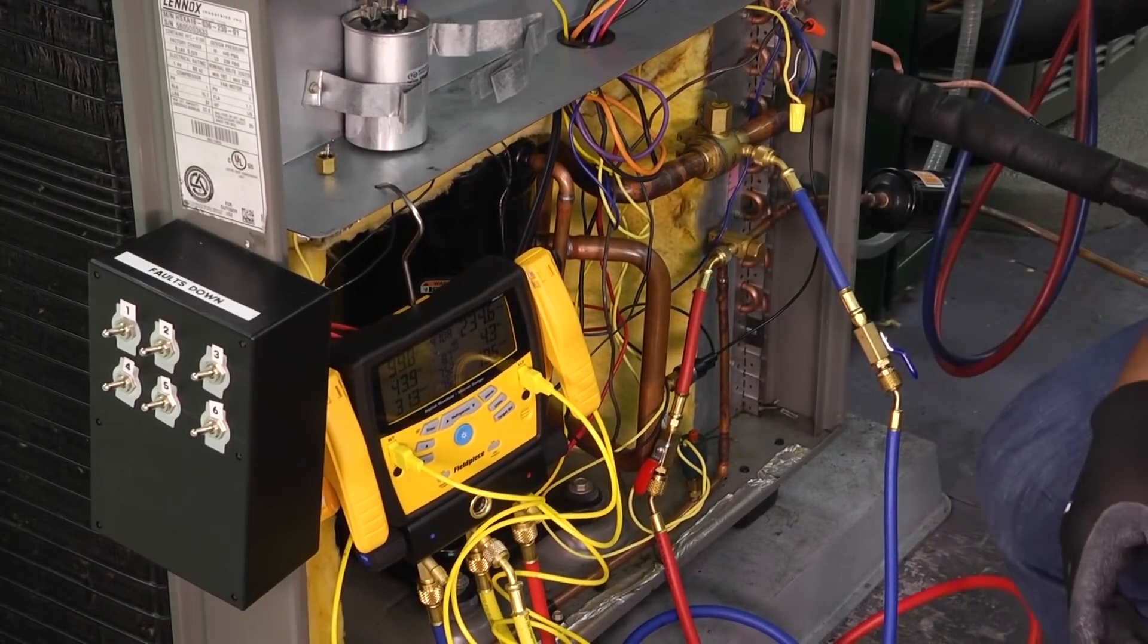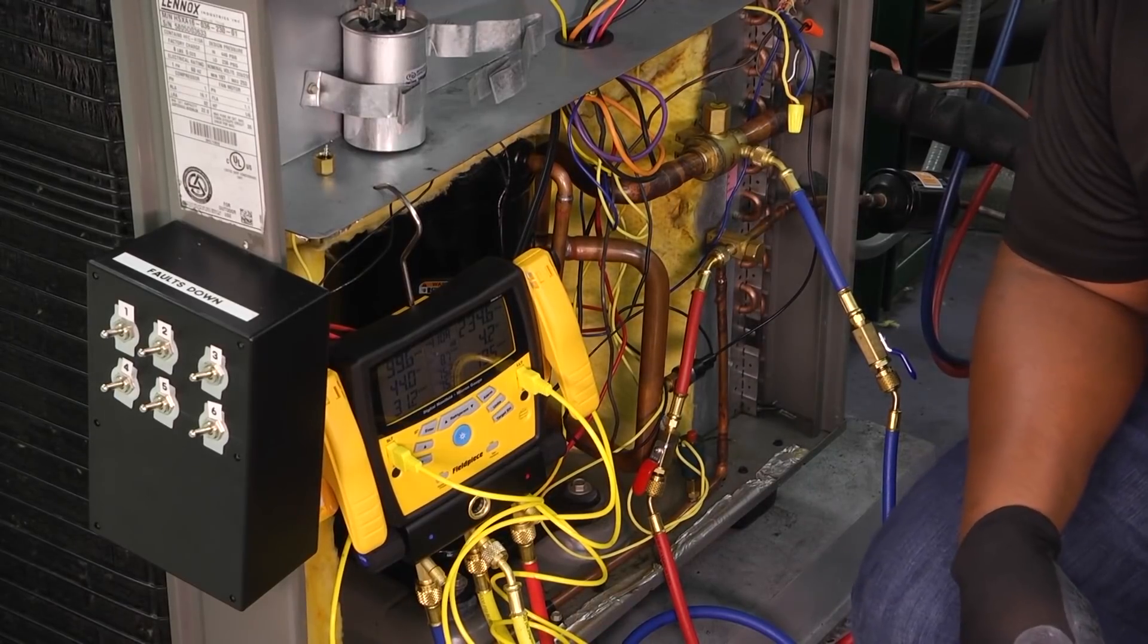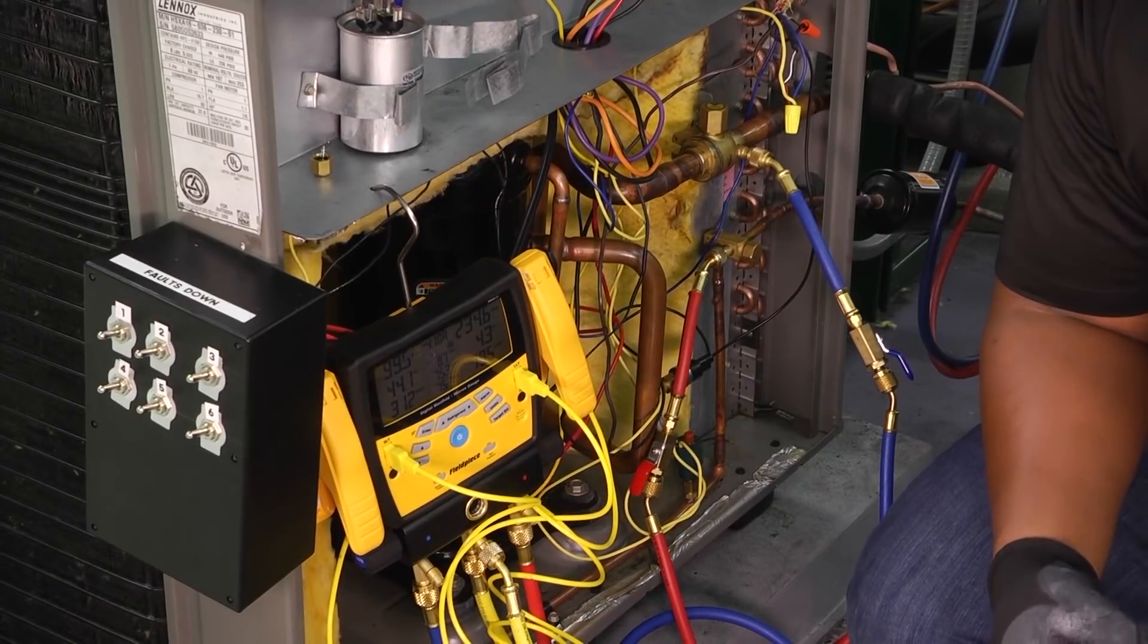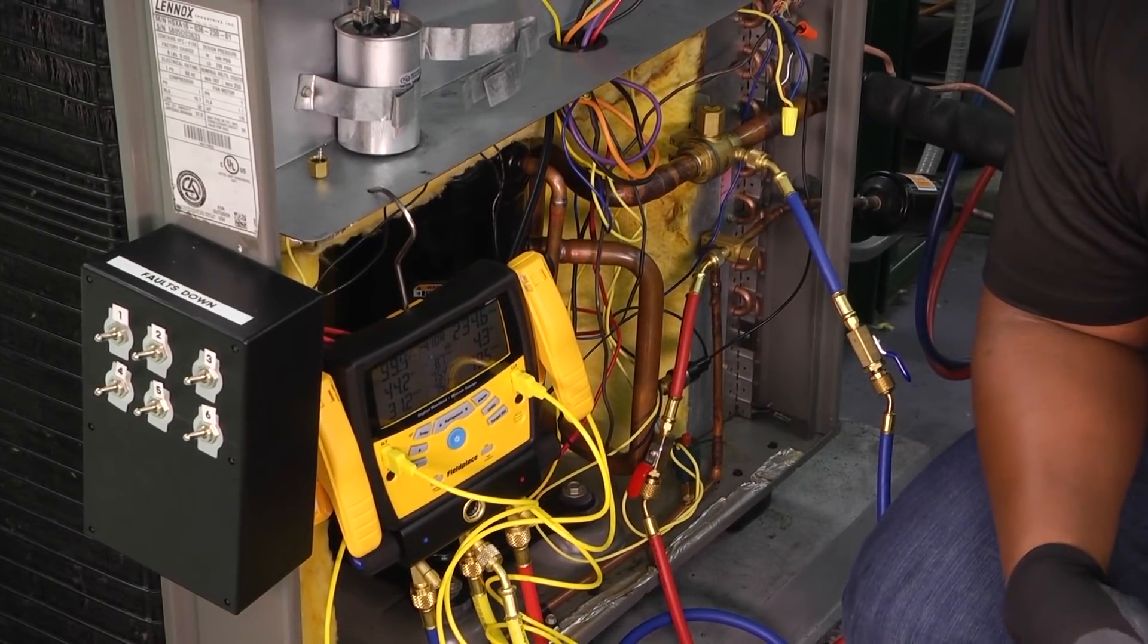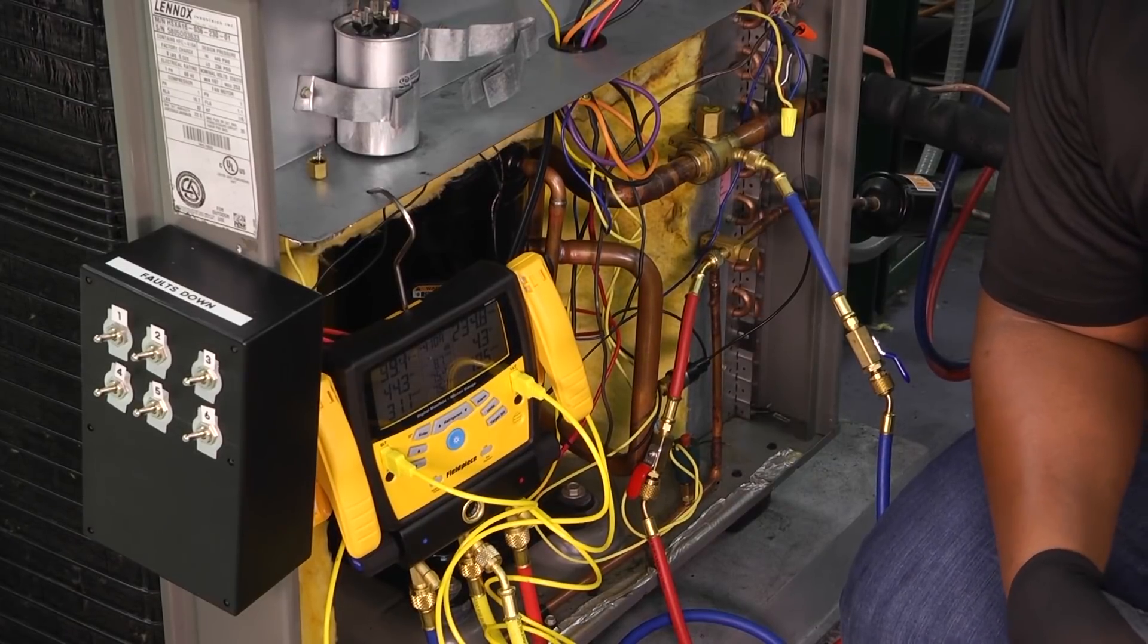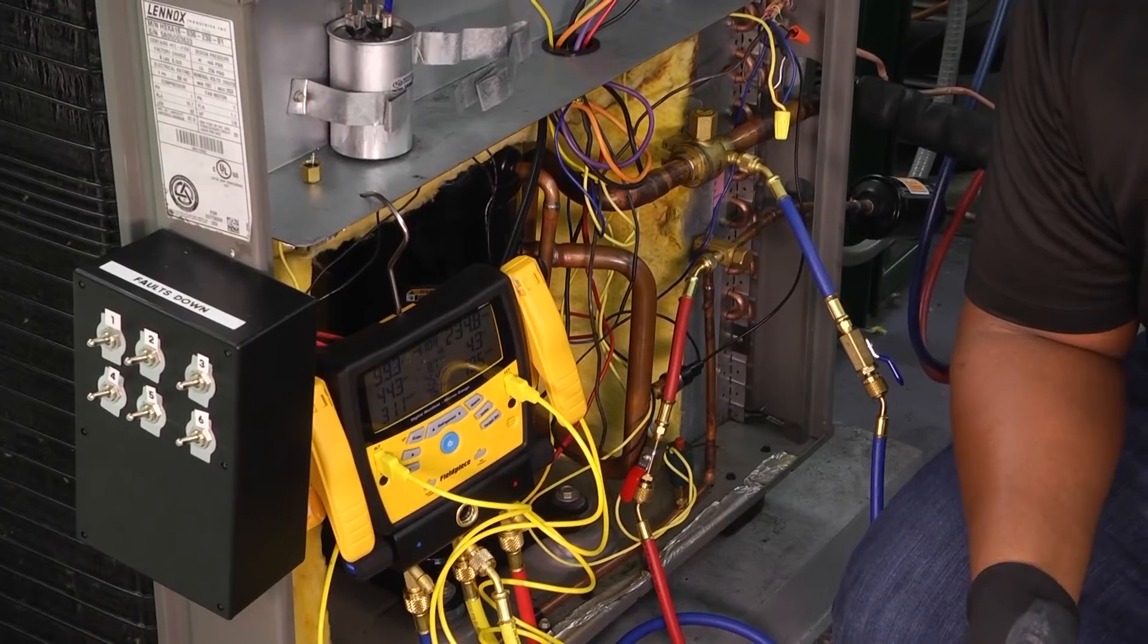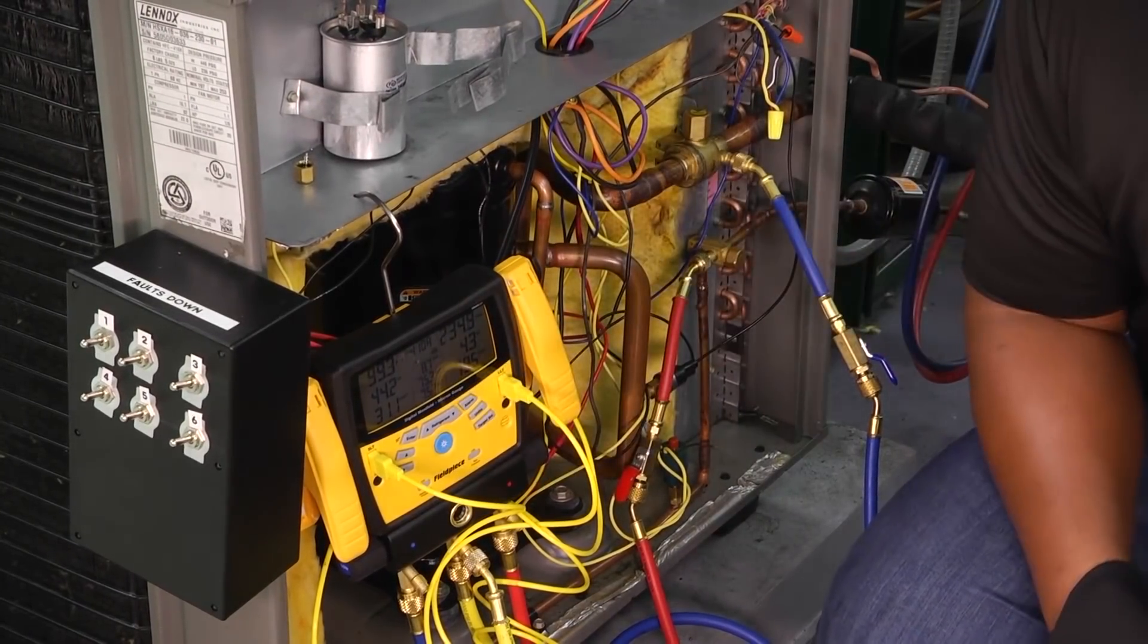The very first thing that we need to do is we need to determine what type of metering device we have. If we have a TXV or whether or not our metering device is a fixed orifice, that's going to be very important at the number that is most important to us in charging. For example, if we have a fixed orifice metering device, we're going to charge looking at our superheat number.